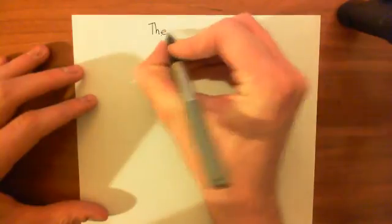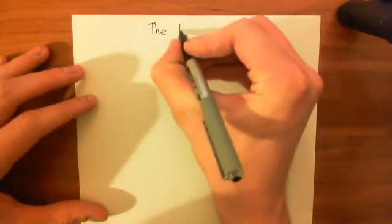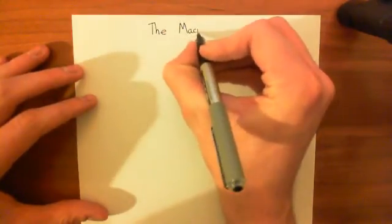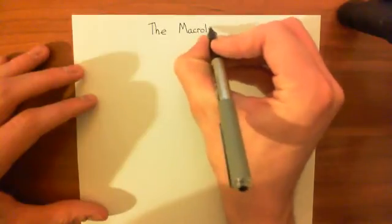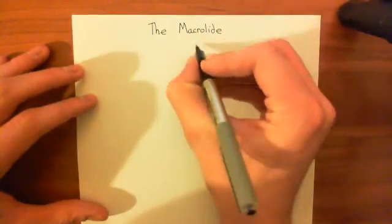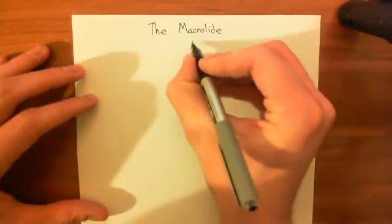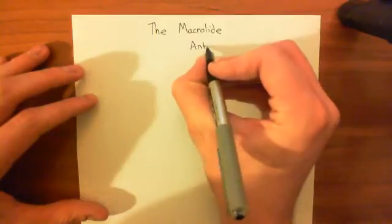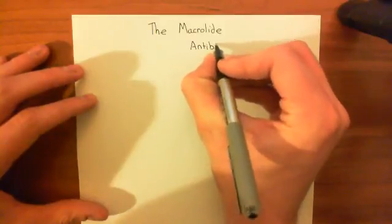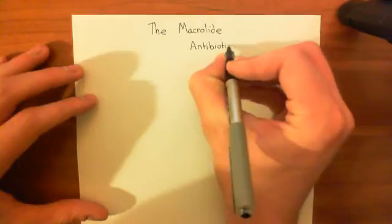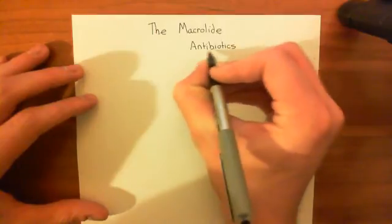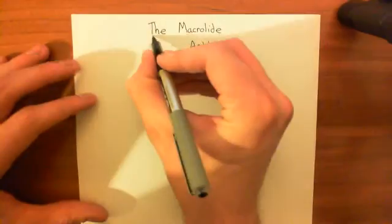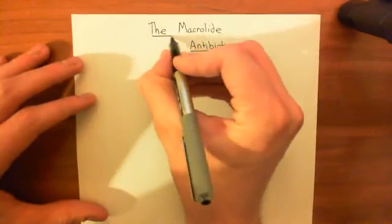The macrolide antibiotics is a family of antibiotics that all have a certain chemical structure. In this video we're going to see how they all work, and they work basically by blocking protein synthesis — they stop the cell from being able to produce more proteins.